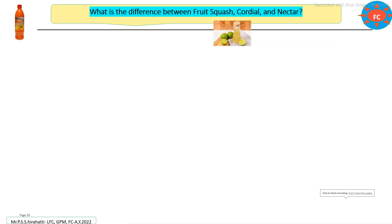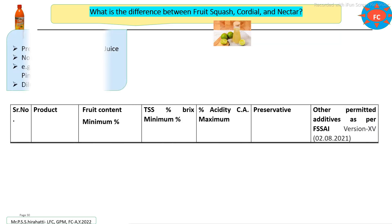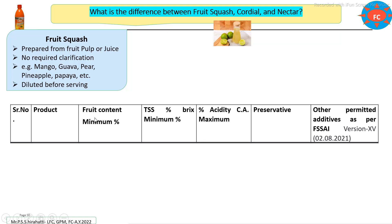Now, what is the basic difference between fruit squash, cordial, and nectar with respect to brix, acidity, and specifications? Squash is the product made from any fruit pulp or juice with no clarification required. It is mostly prepared from mango, guava, pear, pineapple, papaya, etc., and may use pulp, juice, or a combination. Dilution is required before serving.